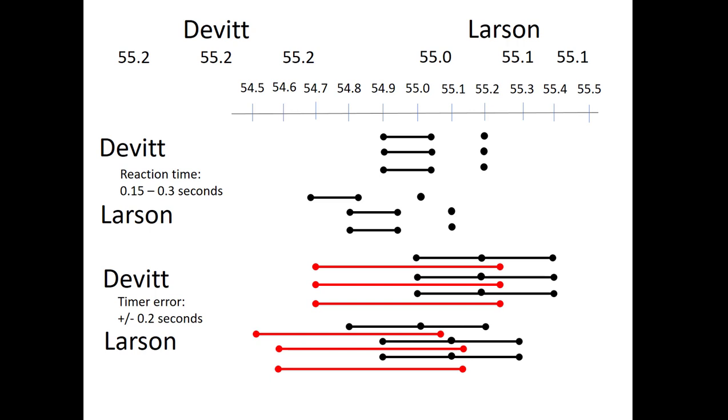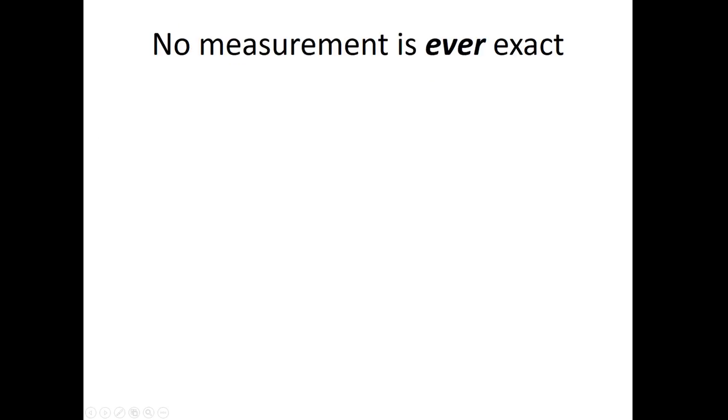And that's why the dispute over who won that race went on for months. You might be interested to know that the judges awarded the race to Devitt against the popular view at the time. But this is a maths lesson, not one of Olympic history. Read up on it yourself if you want. The important thing I want you to remember from this is no measurement is ever exact.